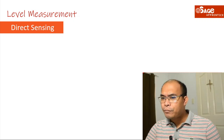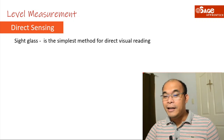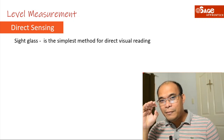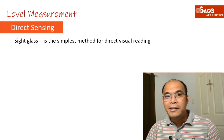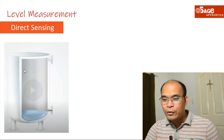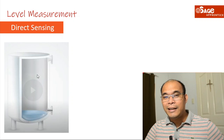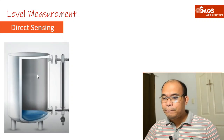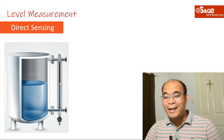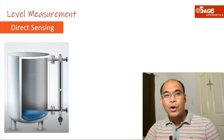Let us start with the sight glass. The sight glass is the simplest method for direct visual reading. From the word itself — sight glass — you can see the level using the glass because it is transparent. In industry, for example, if this is our tank, the sight glass is visible here. You can see the level rising through the transparent portion of the sight glass.